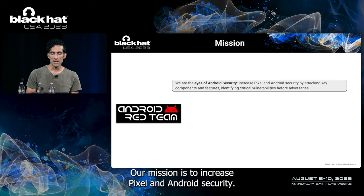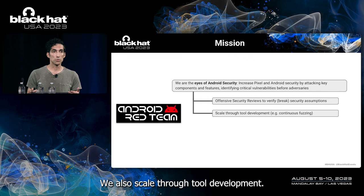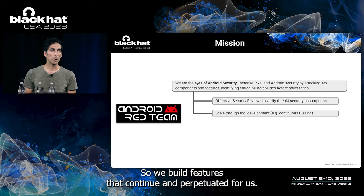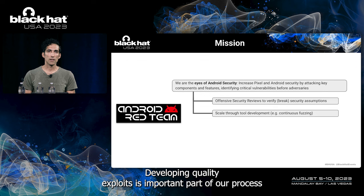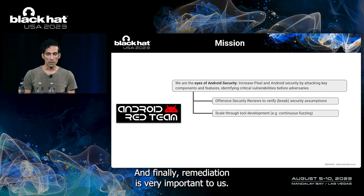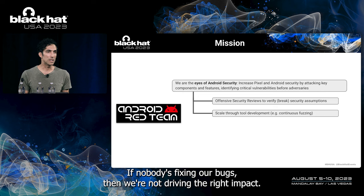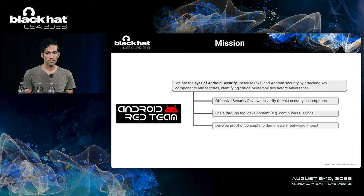We are the Android Red Team. Our mission is to increase Pixel and Android security. We do that primarily through offensive research, simulating adversarial campaigns. We also scale through tool development, investing in fuzzing — building fuzzers that run in perpetuity, finding bugs continuously. We invest a lot of time in exploit development, which helps articulate difficult security concepts to leadership and helps us find more bugs. Remediation is very important; if nobody's fixing our bugs, we're not driving the right impact, so we have a close relationship with feature and developer teams.